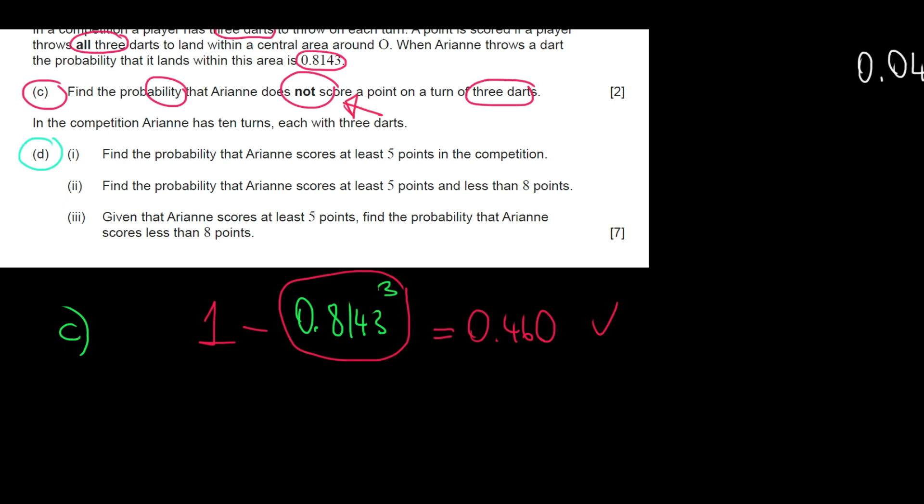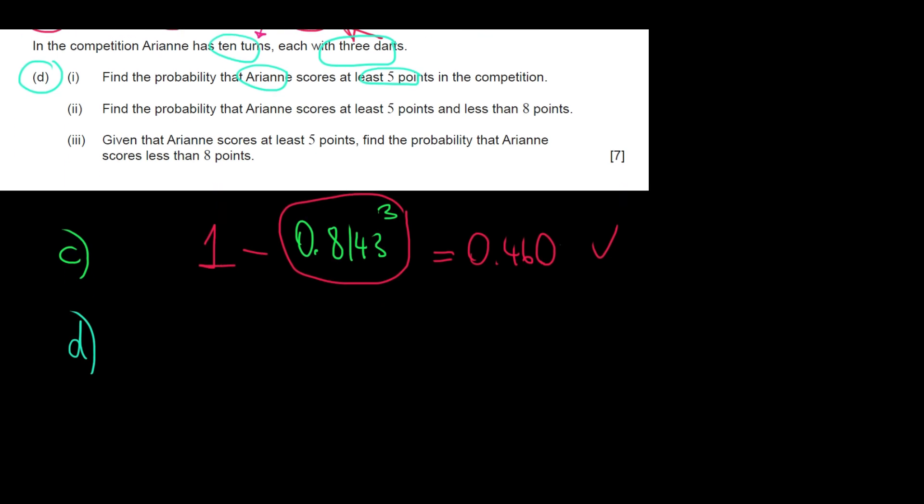And for question D, we have the following: In the competition, Ariane has 10 turns each with three darts. Find the probability that Ariane scores at least five points in the competition. Since we have 10 turns and we have three darts for each and the possible outcomes are scoring a point or not scoring a point, we can claim that this variable, let's call this variable y, follows the binomial distribution with 10 as the number of trials and the probability of success.